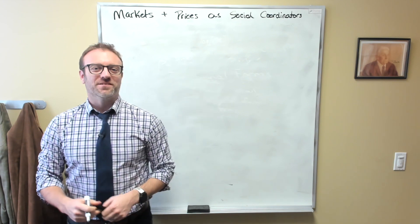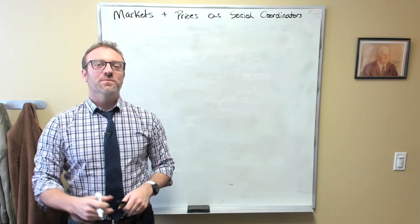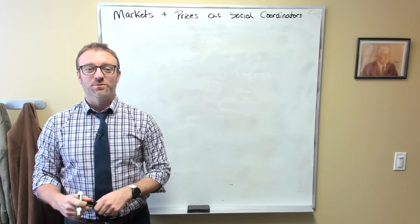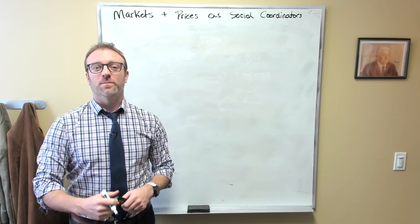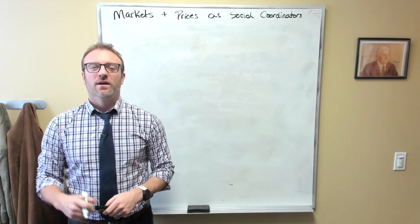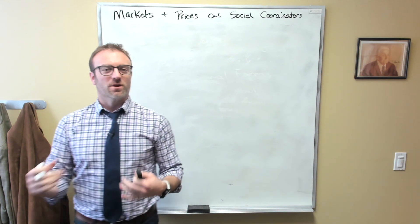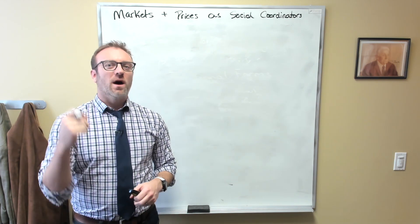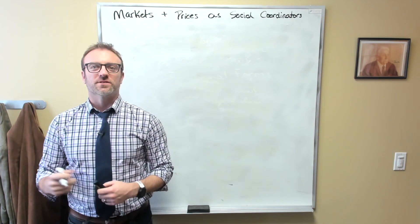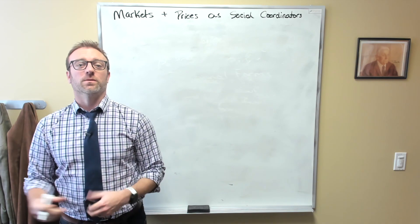All right, so welcome back to Intermediate Micro. Today we're going to go through chapter 10 of Universal Economics by Armin Alchin and Bill Allen. And this lecture has the potential to ruffle some feathers, but it also highlights how real economists think about issues in the real world.